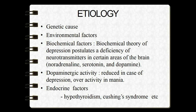The etiology of depression includes genetic causes — there may be genetic variations involved. Environmental factors also play a role. Biochemical factors: the biochemical theory of depression postulates a deficiency of neurotransmitters in certain areas of the brain, like noradrenaline, serotonin, and dopamine. Dopaminergic activity is reduced in depression, while in mania it is enhanced.